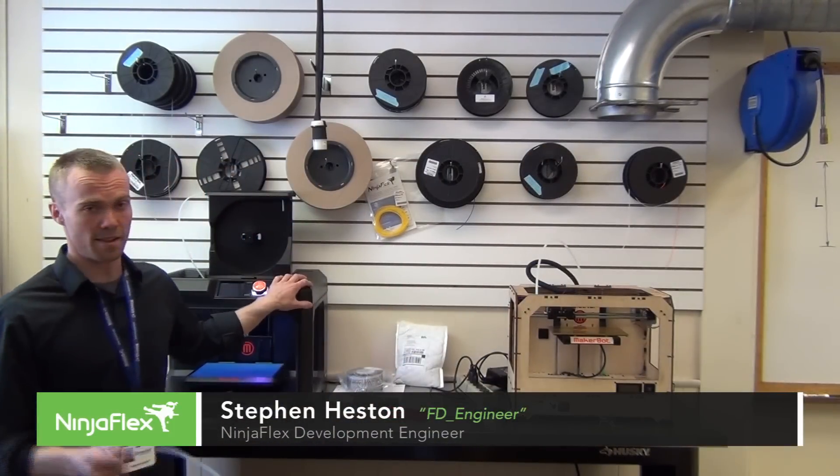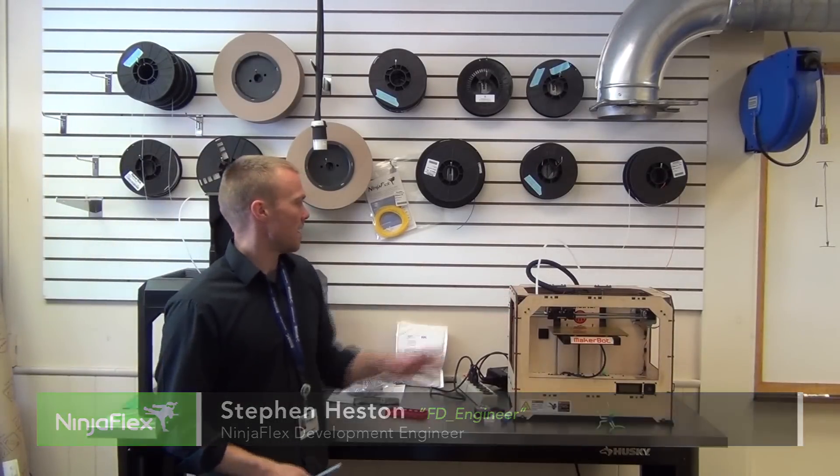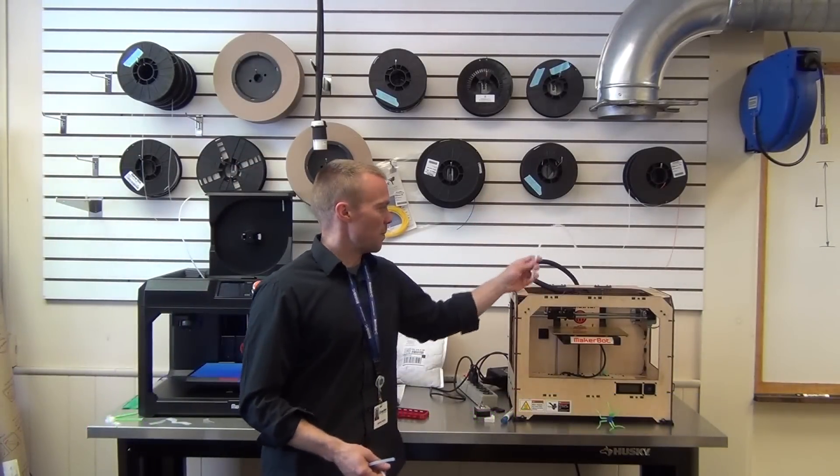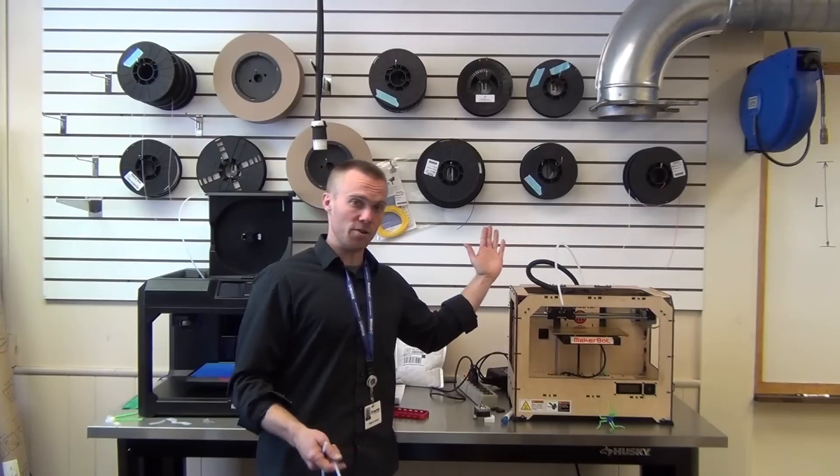Okay, so we're still talking about guide tubes here. Got two different machines we're looking at, they both happen to be MakerBots. This is a Rep 1. The Rep 1 has a guide tube that's mounted directly against the back of the machine.